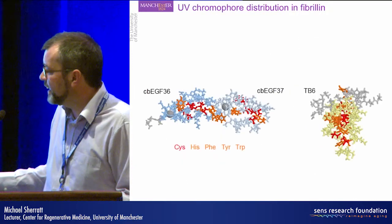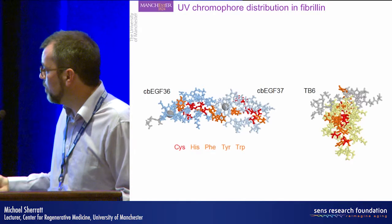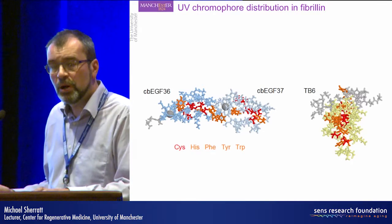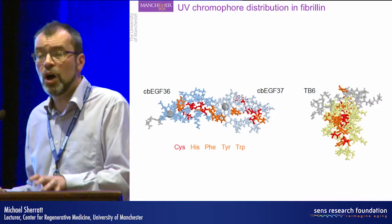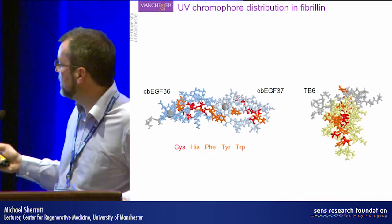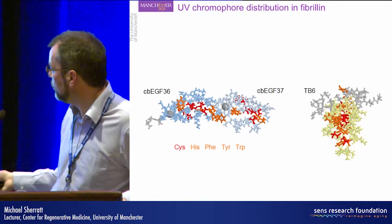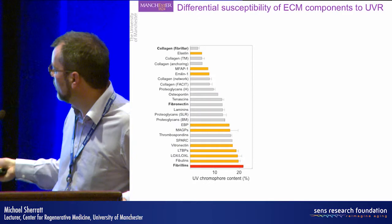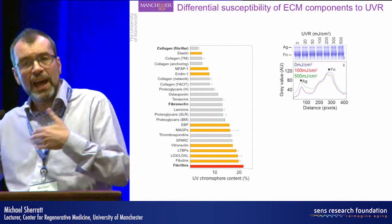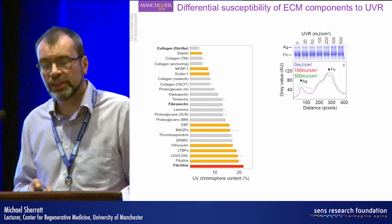Importantly, here's elastin and here's collagen. These major structural proteins are largely devoid of oxidation-sensitive amino acids. This contrasts with the microfibril proteins that we can see here — here's fibrillin, here's LTBP, here's fibrillin-5 — so we have a big spread in relative susceptibility to oxidation.